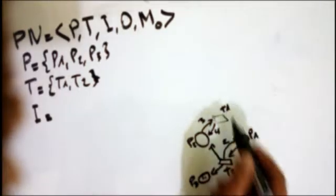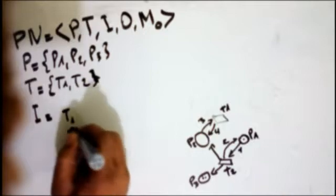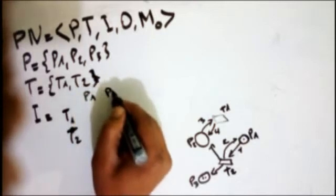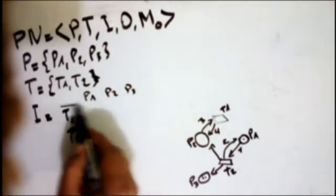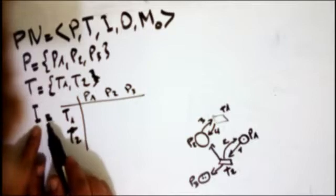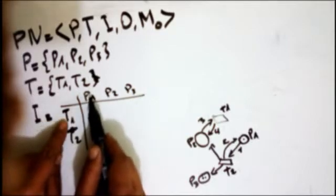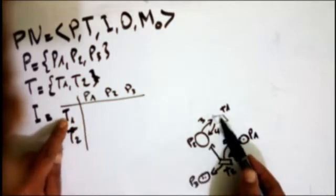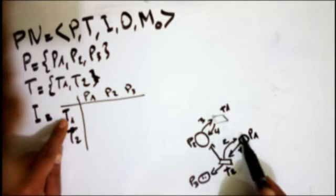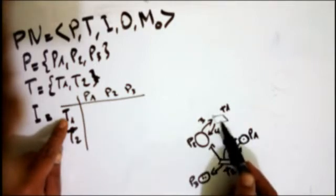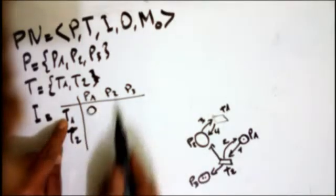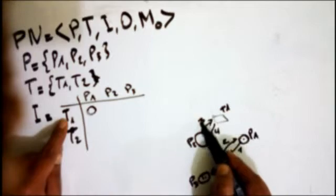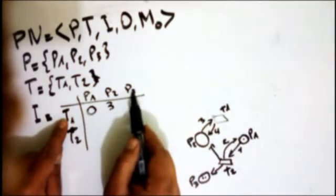The input matrix I has two transitions T1 and T2 as columns, and the places P1, P2, and P3 as rows. The input means the arc weight from a place to a transition. The input from P1 to T1: there is no input arc from P1 to T1, so we write zero. For P2 to T1, the input is 3.